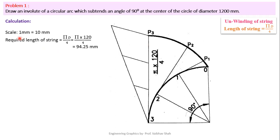We will first use a scale because we have a very large dimension of 1200 mm. For simplicity, we are converting to a smaller unit by taking a scale of 1 mm equal to 10 mm. So in place of every 10 mm, we will use only 1 mm. Therefore, 1200 mm becomes 120 mm.